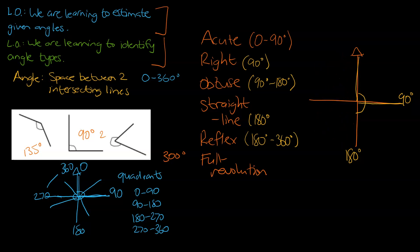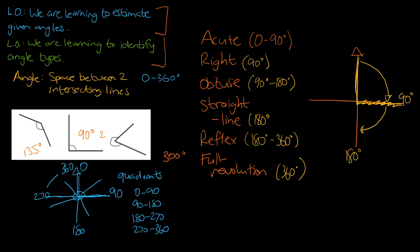And finally, our full revolution — most of us should know this already — that's 360 degrees, and that's an angle that goes all the way around and finishes where it starts. That actually touches base on every possible combination of our quadrants. Anything up to the 90 degree line is acute, then we get the right angle, then we get any angle that could be obtuse, then we get the straight line angle, then any angle that could be a reflex angle, and finally we finish up with a full revolution.